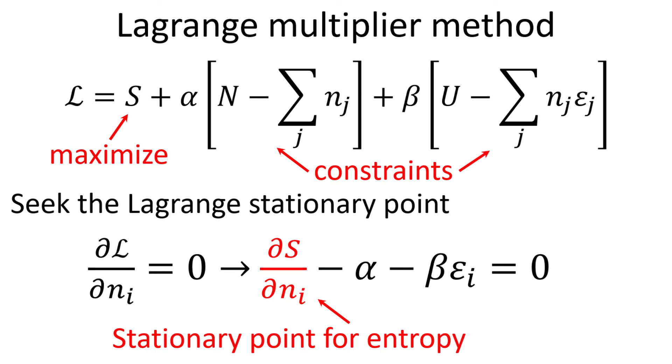To solve this trio of equations, we shall resort to the method of Lagrange multipliers. The method of Lagrange multipliers is a strategy for finding the local maxima and minima of a function subject to equality constraints. We introduce an auxiliary function L, which consists of the entropy S which we seek to maximize, in addition to the two constraints. We seek to find the Lagrange stationary point with respect to the number of particles at each energy level i.